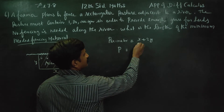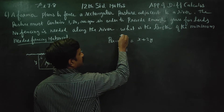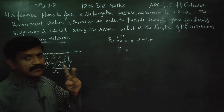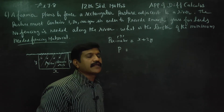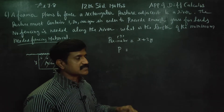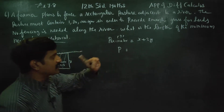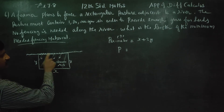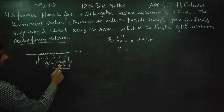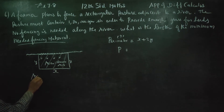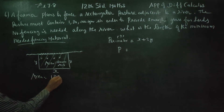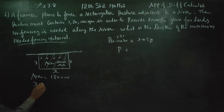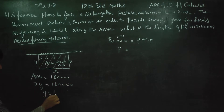P is equal to x plus 2y. This is the perimeter, which is the function. The area formula, length into breadth, is equal to 1,80,000. Therefore y is equal to 1,80,000 divided by x.